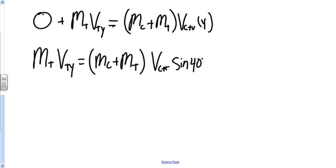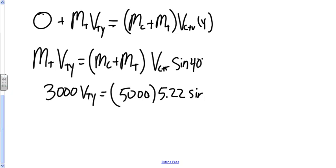Plugging in our numbers: 3,000 kg times the velocity of the truck in the y direction equals (3,000 + 2,000) kg, so 5,000 kg, times the velocity of the car plus truck, which was 5.22 m/s, times sine of 40 degrees.